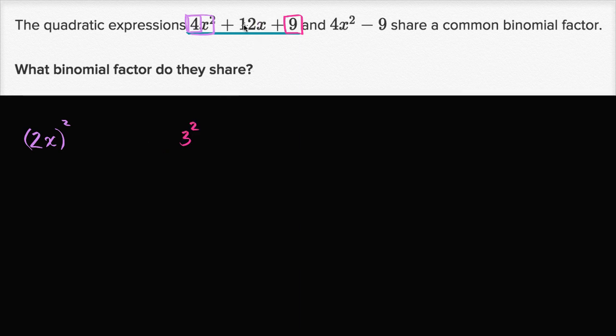In order for it to fit the pattern of a perfect square polynomial, the coefficient here on the x term would need to be 2 times the product of this 2 and this 3. And it is indeed 2 times the product of 2 and 3. It is 2 times 6.